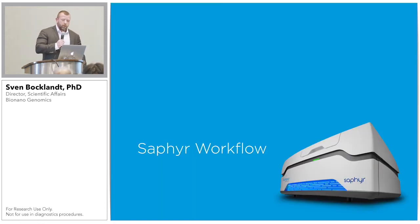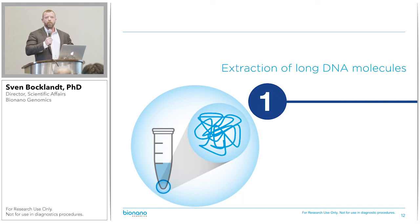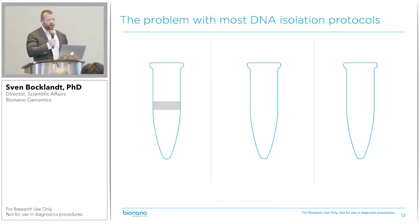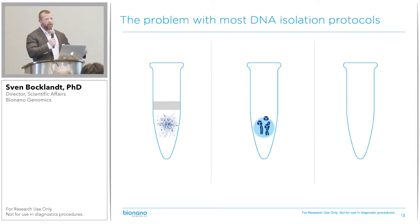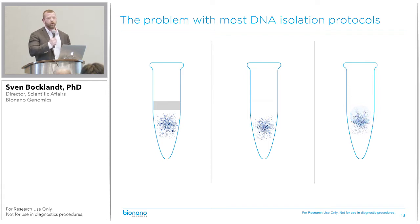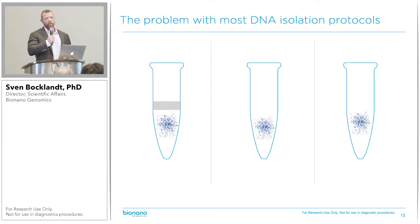To start imaging megabase-sized DNA, you have to have megabase-sized DNA — and that's not obvious, because every standard DNA isolation method, whether it uses spin columns, magnetic beads, or simply precipitates the DNA, breaks these molecules into fragments that are typically shorter than 50 KB. So you can't get megabase data out of that.